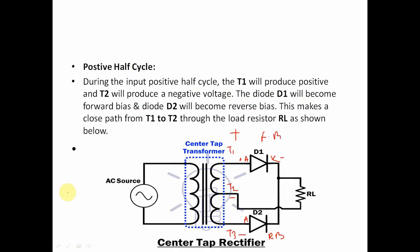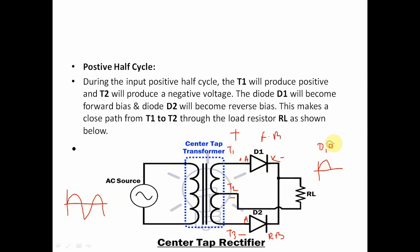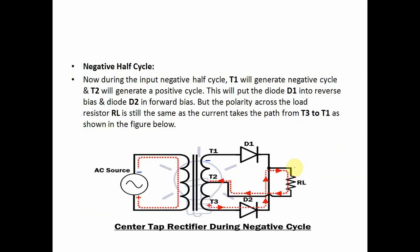In the positive half cycle, T1 is positive with respect to T2 and T3, so diode D1 acts as forward biased and D2 acts as reverse biased. Only the positive half cycle appears across load resistance RL. In this circuit condition: diode D1 is ON and D2 is OFF.